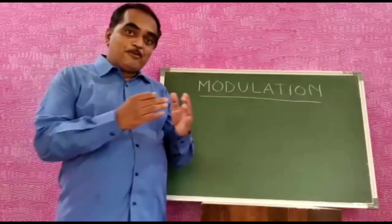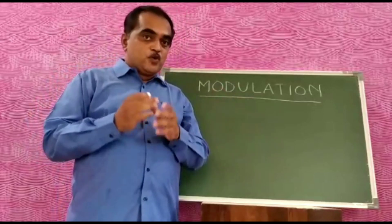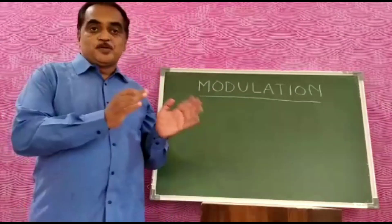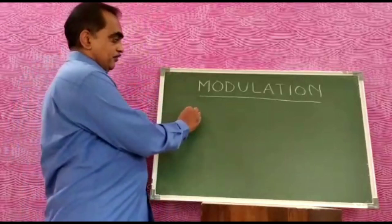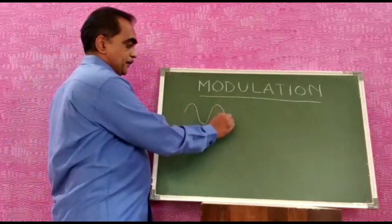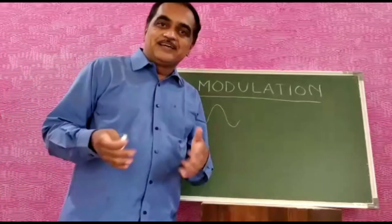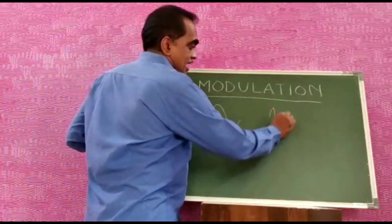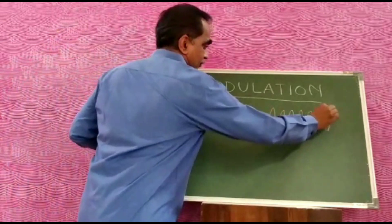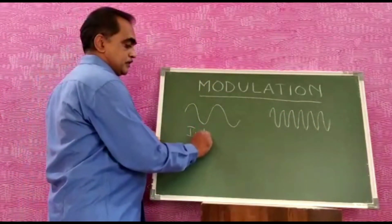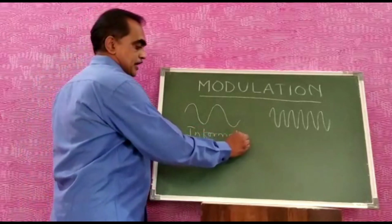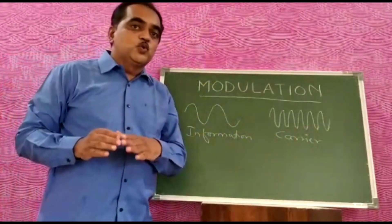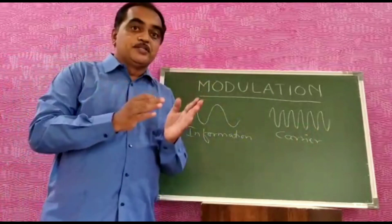In modulation, there will be one more high frequency sine wave which will carry this low frequency information or data from one point to another in long distance communication. This is your information signal, which is a low frequency signal — you can call it information, message, or data. And this high frequency sine wave will be the carrier. The job of the carrier is to carry the information from one point to another.